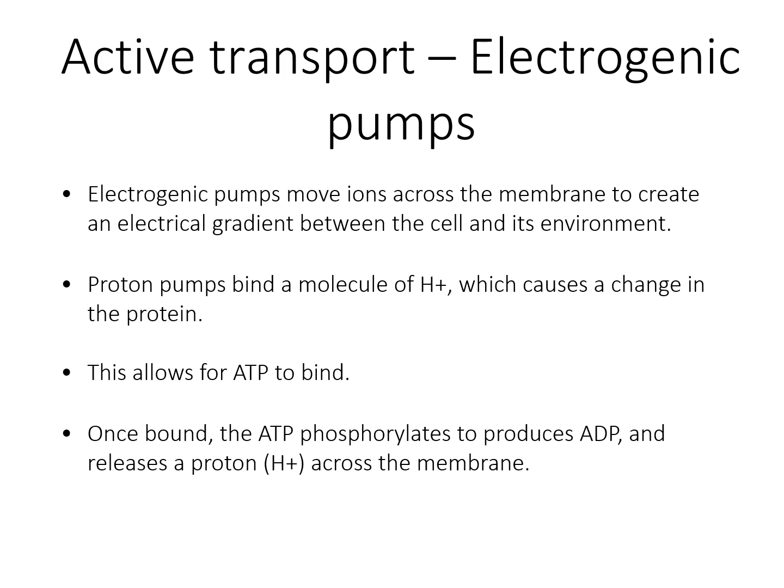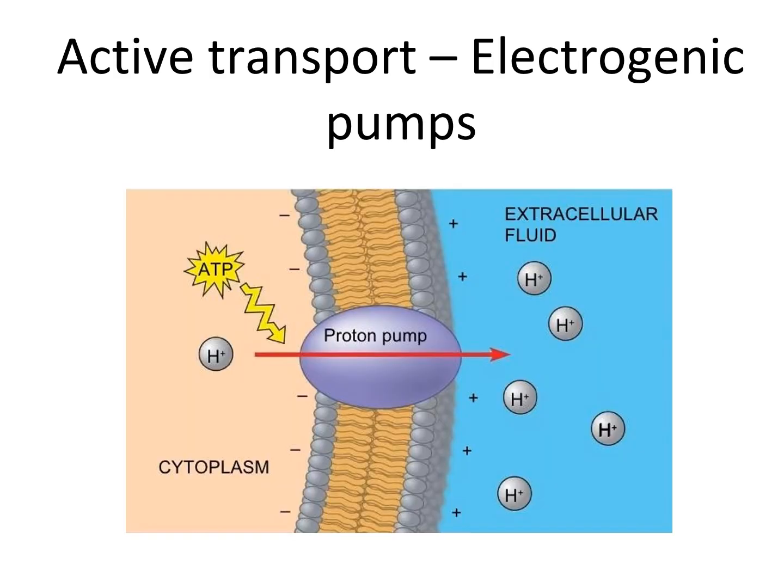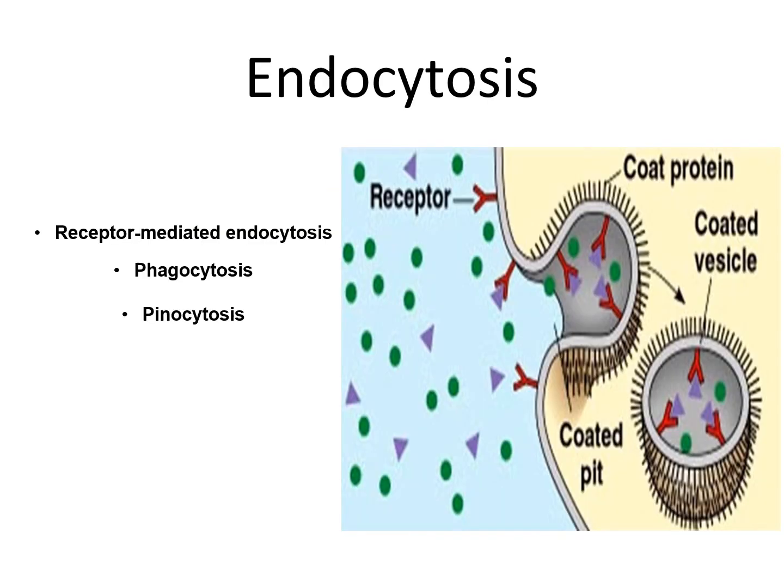With regards to electrogenic pumps, these move ions across the membrane to create an electrical gradient between the cell and its environment. There are many types of electrogenic pump, but we can see this clearly in proton pumps. Proton pumps bind hydrogen ions, causing a change in the protein. This allows adenosine diphosphate to bind, and once bound, ATP is used to release a hydrogen proton across the membrane — moving hydrogen ions from the intracellular to the extracellular side.